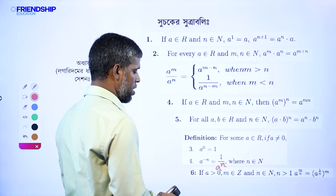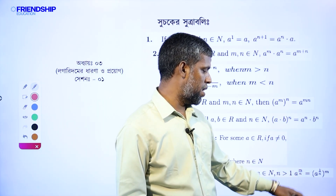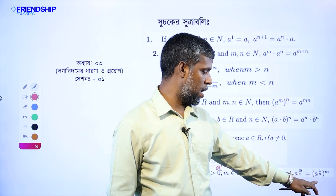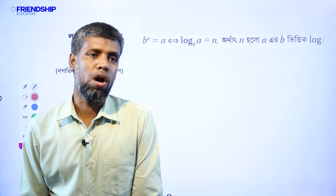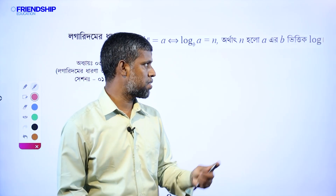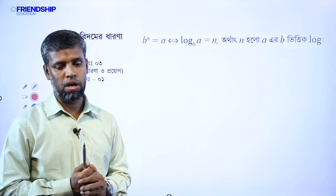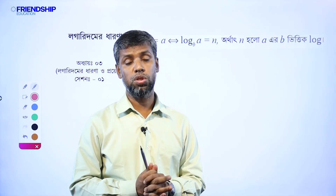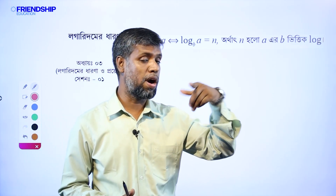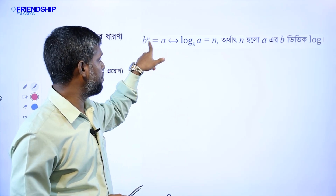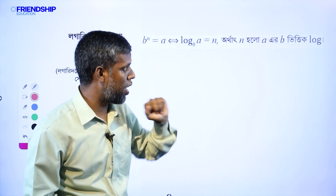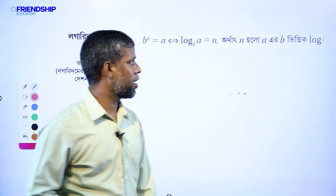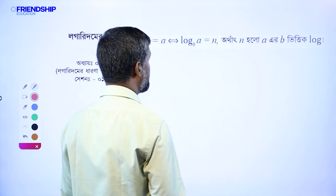If a is greater than 0, m and n belong to Z, then a to the power m divided by n is equal to 1 by a to the power n, whole to the power m. So, a to the power n is equal to a.